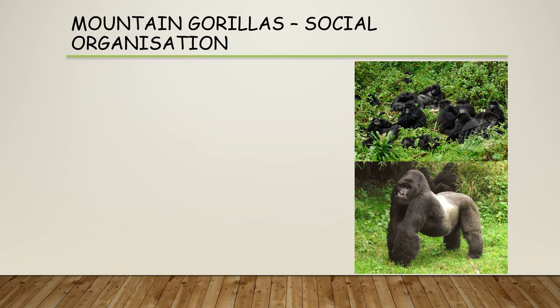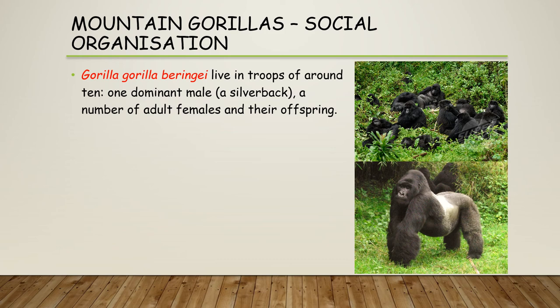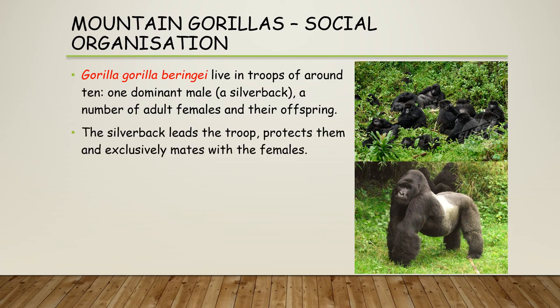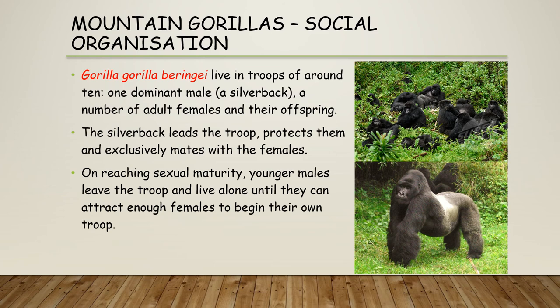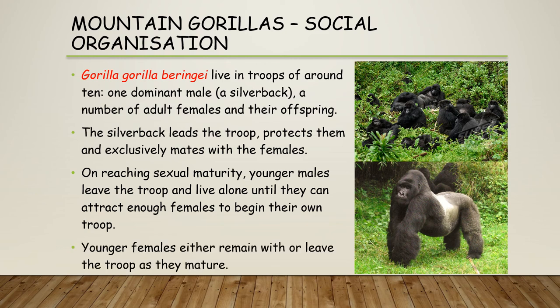Mountain gorillas have incredible social organisation. They live in troops of around ten: one dominant male — a silverback — a number of adult females, and their offspring. The silverback leads and protects the troop and exclusively mates with the females. Upon reaching sexual maturity, younger males leave the troop and live alone until they can attract enough females to form their own troop, and younger females either remain or leave the troop as they mature.